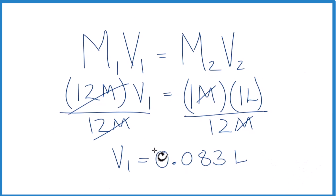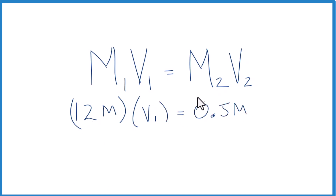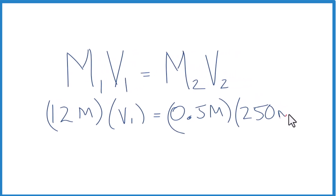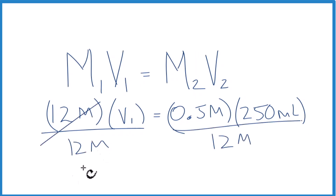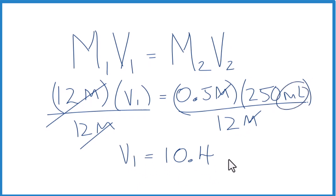This is really helpful because we can use this equation in a number of ways. For example, we have our 12 molar concentrated hydrochloric acid, and we want to make 0.5 molar — say 250 milliliters. Dividing both sides by 12 molar, molarity cancels out, and V1 equals 10.4 milliliters. So we put some water in our flask, add 10.4 milliliters of concentrated hydrochloric acid, bring it up to the mark, and we have our solution.